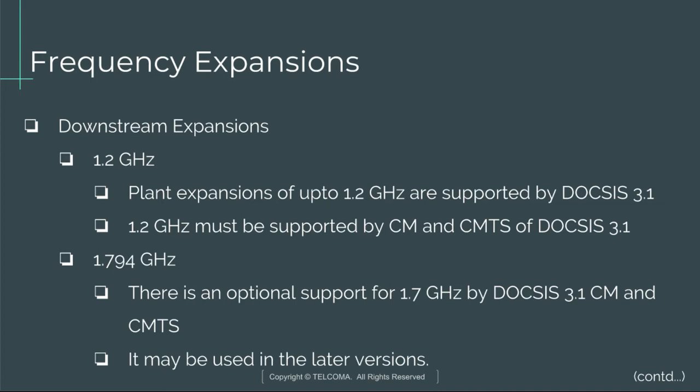For downstream frequency expansions, plant expansions of up to 1.2 GHz are supported by DOCSIS 3.1. The CM and CMTS of DOCSIS 3.1 support 1.2 GHz. There is also optional support for 1.794 GHz by DOCSIS 3.1 CM and CMTS.